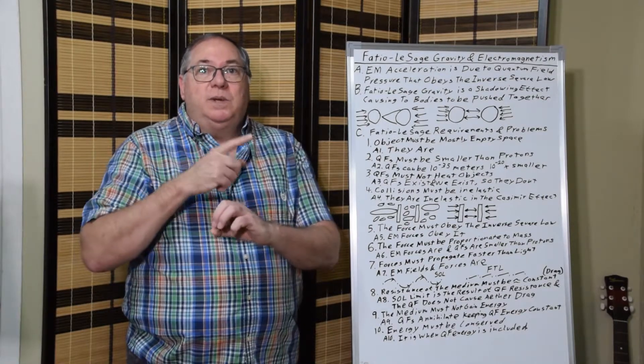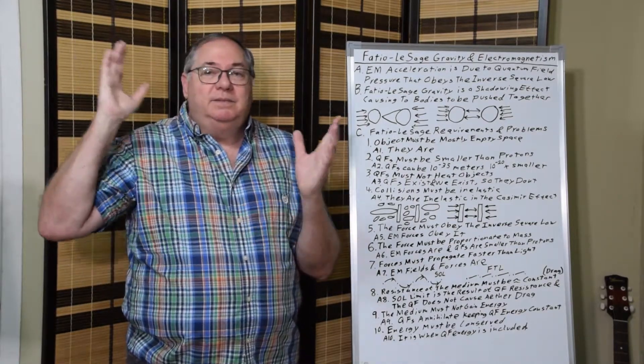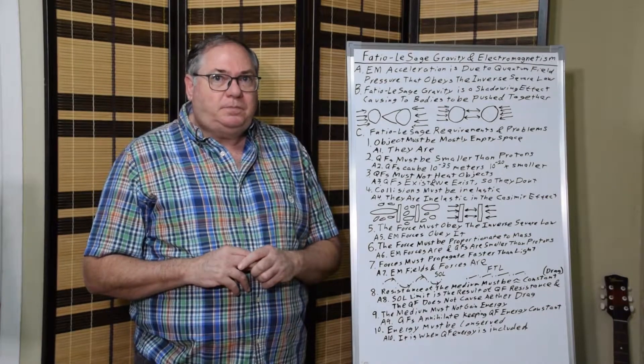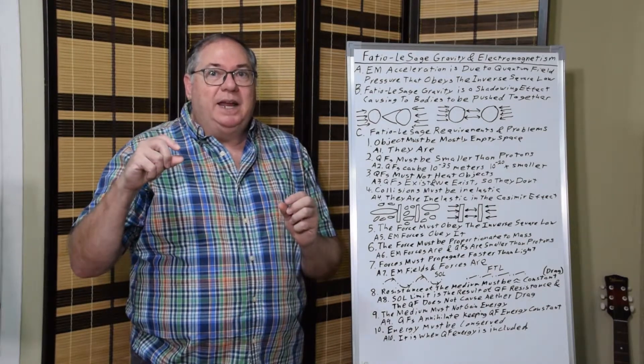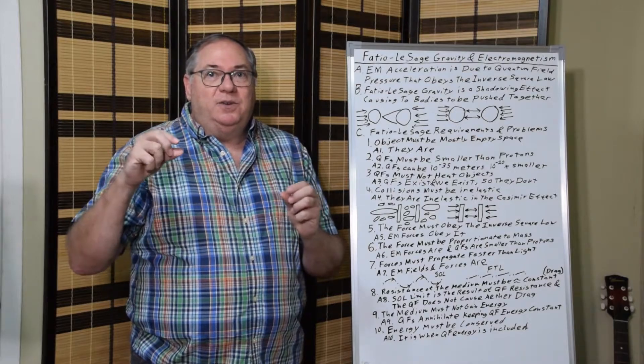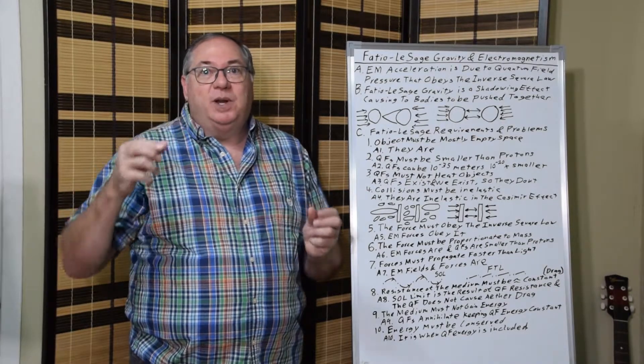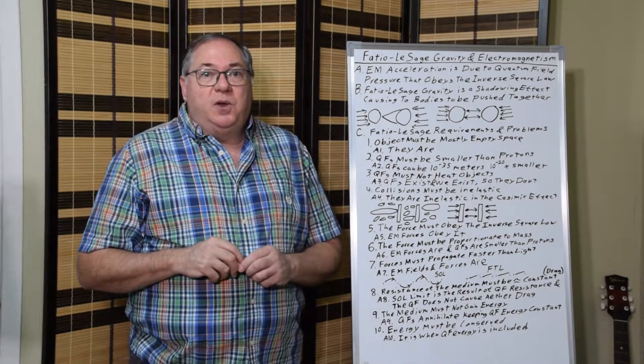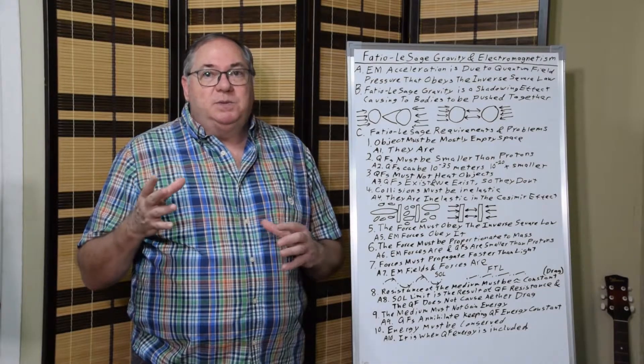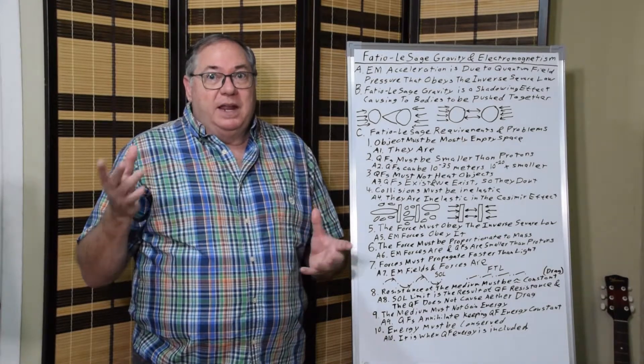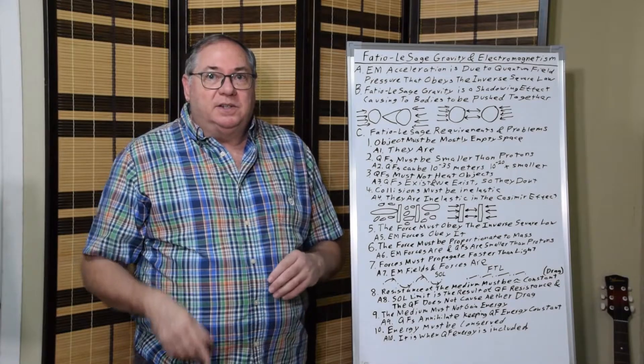If they don't, orbits would degrade and nothing would be stable, because there would be a delay and you'd be sending a signal from where you used to be instead of where you are. So in order to prevent this problem, gravity and electromagnetism must be faster than light.